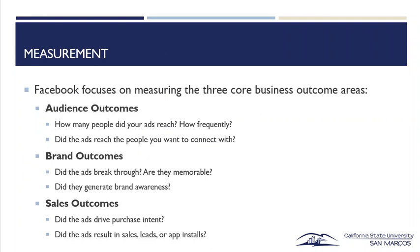Facebook focuses on measuring three core business outcome areas. The first is audience outcomes — how many people did your ads reach and how frequently did the ads reach the people you want to connect with? The second is brand outcomes — did the ads break through, are they memorable, did they generate brand awareness? The last one is sales outcomes — did the ads drive purchase intent, result in sales leads, or app installs?